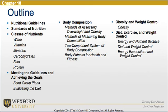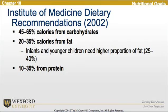We're going to start with the Institute of Medicine dietary recommendations from 2002. We see that 45 to 65% of the calories are recommended from carbohydrates, 20 to 35% of the calories from fat, with infants and younger children eating a higher proportion of fat at approximately 25 to 40%, and the recommended 10 to 35% from protein.